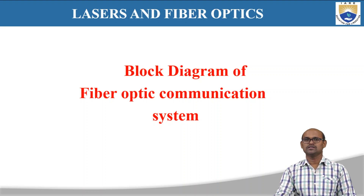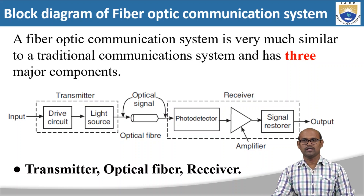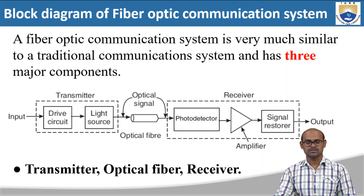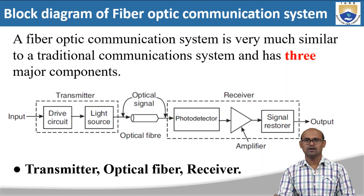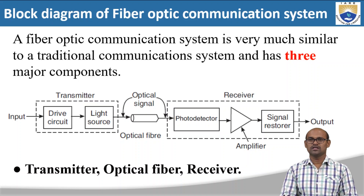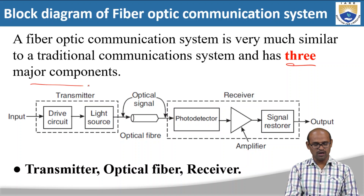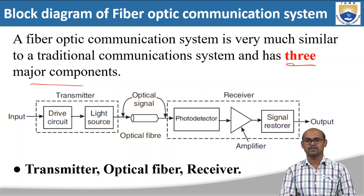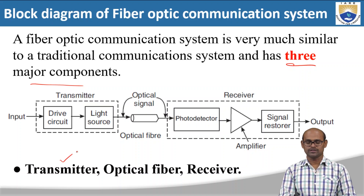A fiber optic communication system is very similar to a traditional communication system and it has three major components. This optical fiber communication system has three major components: transmitter, optical fiber, and receiver. These are the three important components in the block diagram of an optical fiber communication system.